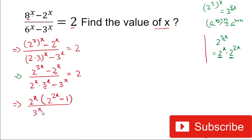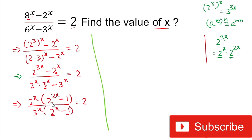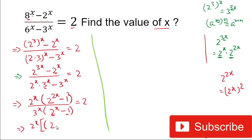In the denominator, we take 3 to the power x common, leaving 2 to the power x minus 1, so the denominator is 3 to the power x times (2 to the power x minus 1), equals 2. To allow cancellation, we need the numerator to also contain the factor (2 to the power x minus 1). We rewrite 2 to the power 2x as (2 to the power x)² and 1 as 1², setting up a difference of squares.